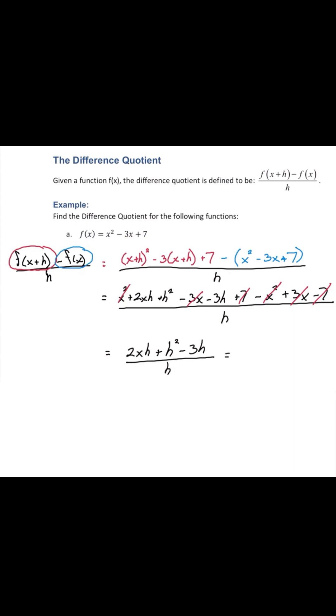At this point we can factor h out of the numerator, leaving us with two x plus h minus three, all over h. We can reduce the h's. And we're finally left with two x plus h minus three.